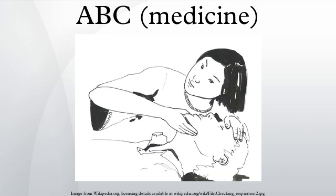The ABC system for CPR training was later adopted by the American Heart Association, which promulgated standards for CPR in 1973. As of 2010, the American Heart Association chose to focus CPR on reducing interruptions to compressions, and has changed the order in its guidelines to circulation, airway, breathing.